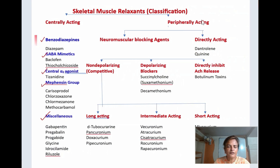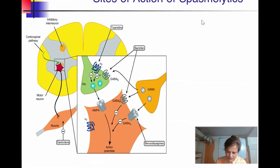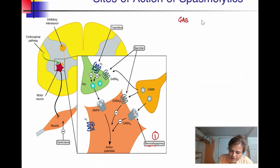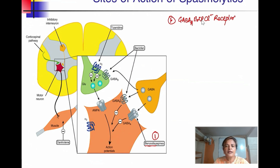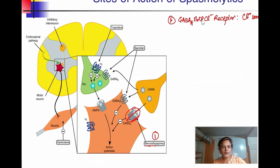The first group, benzodiazepines, act on the GABA-A receptor — the GABA-A benzodiazepine chloride ion-channel-linked receptor. When diazepam binds to this receptor, it increases the frequency of opening of the ion channel, leading to increased influx of chloride ions and hyperpolarization. This is how the diazepam group of drugs act.